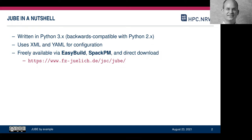JUBE is freely available. You can download it directly via the Jülich website or install it via EasyBuild and the Spack packet manager. The EasyBuild configuration is maintained by Jülich directly since they use EasyBuild as their install backend. In principle it's quite easy to install — like any Python software, you download it, execute setup.py, and the rest is automated.